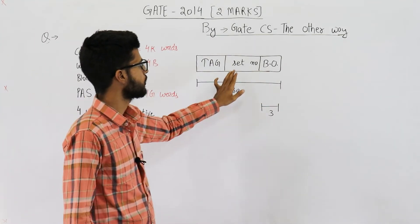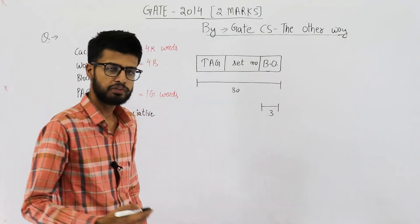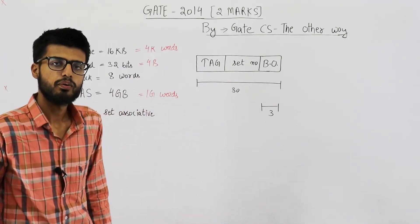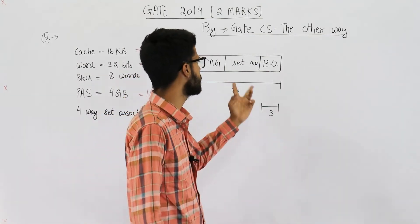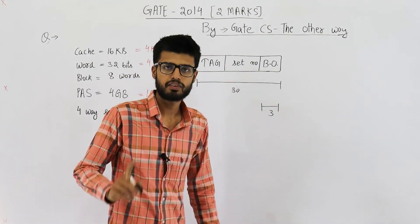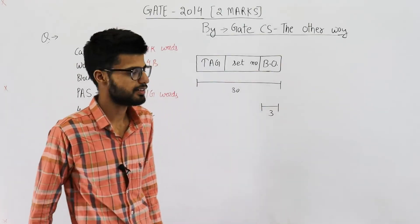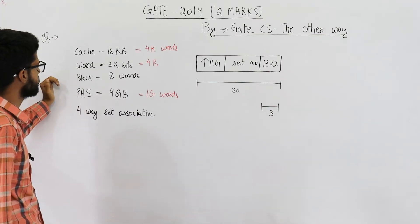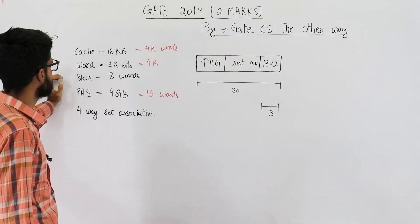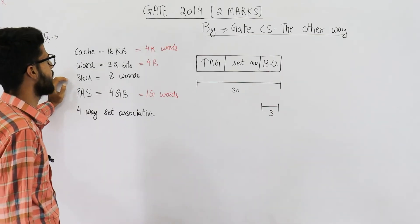Next, let's find out the set number. For finding out set number, we need to find the total number of sets in cache, because this field is used to identify one of all the sets. So to find out the total number of sets, first of all, let's see how many blocks will be there in cache.